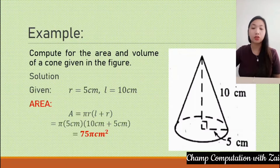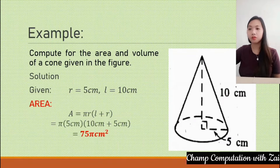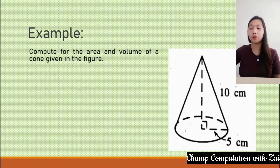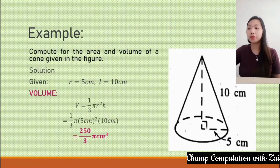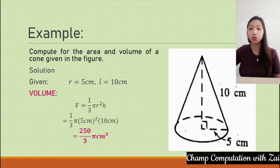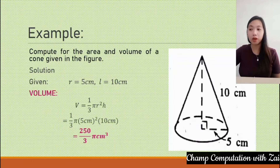As noted before, we leave the answer in terms of π rather than substituting 3.14. For the volume, we use one-third πR² times height. Substituting the values, we have one-third π multiplied by (5 cm)² multiplied by 10 cm, giving 250/3 π cubic centimeters.